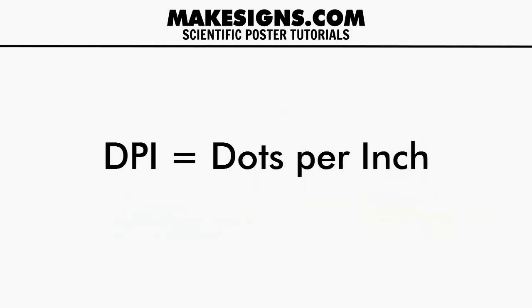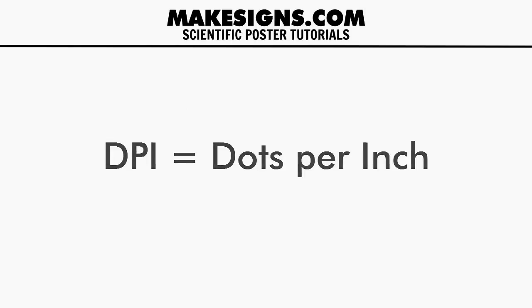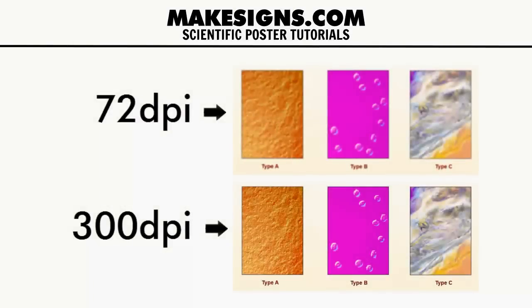Image resolution is measured in something called dots per inch, or DPI. Many images online have a DPI of 72, whereas a good DPI for a poster is closer to 300.